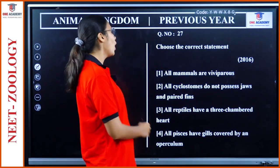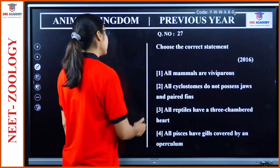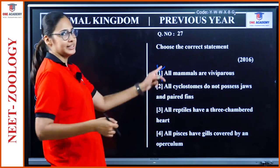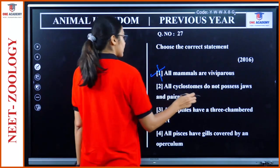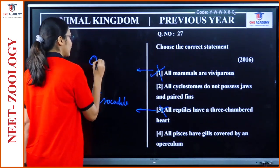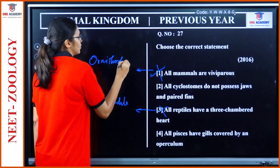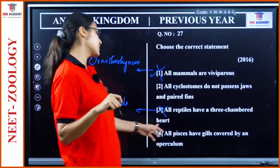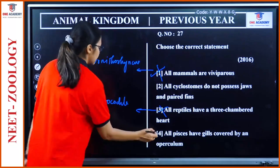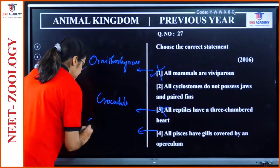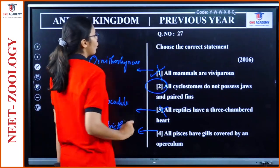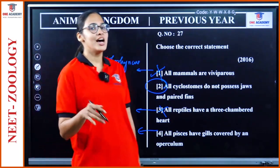Question 27: 'Choose the correct statement.' All mammals are viviparous — wrong, not all are viviparous. All cyclostomes do not possess jaws and paired fins — this could be correct. All reptiles have a three-chambered heart — wrong, exception is crocodile. Ornithorhynchus is also an exception among mammals. All pisces have gills covered by an operculum — wrong, in Chondrichthyes gills are not covered by operculum. The correct statement is: all cyclostomes do not possess jaws and paired fins.